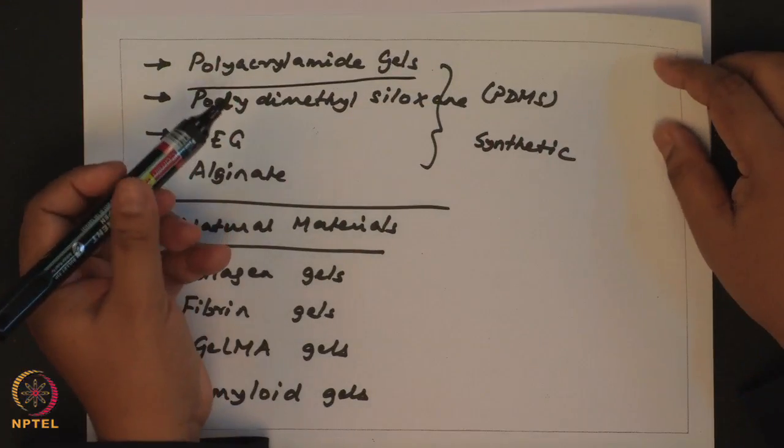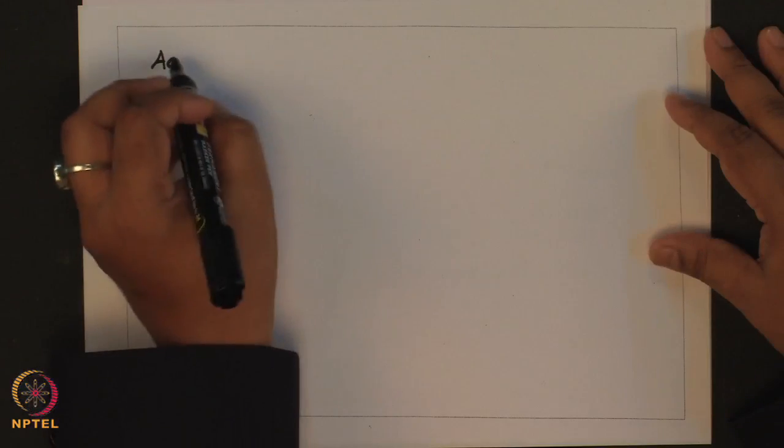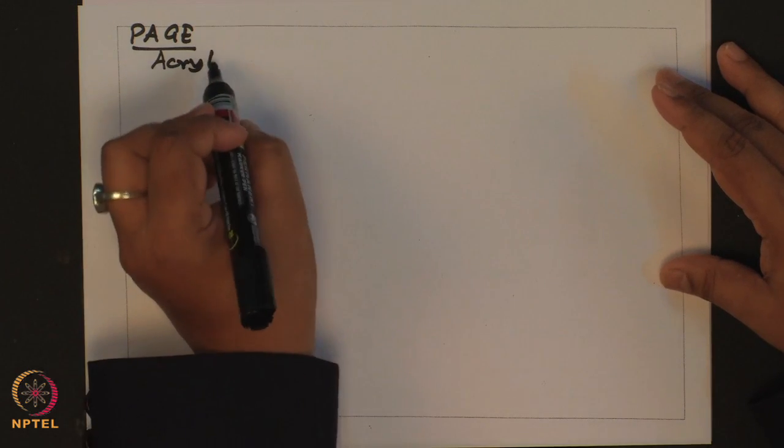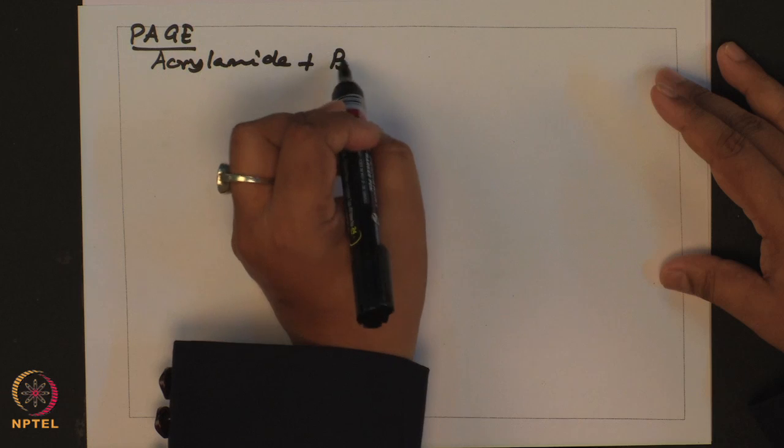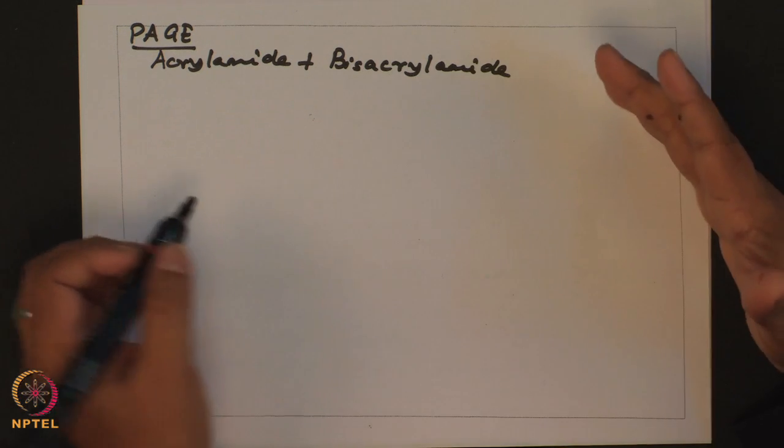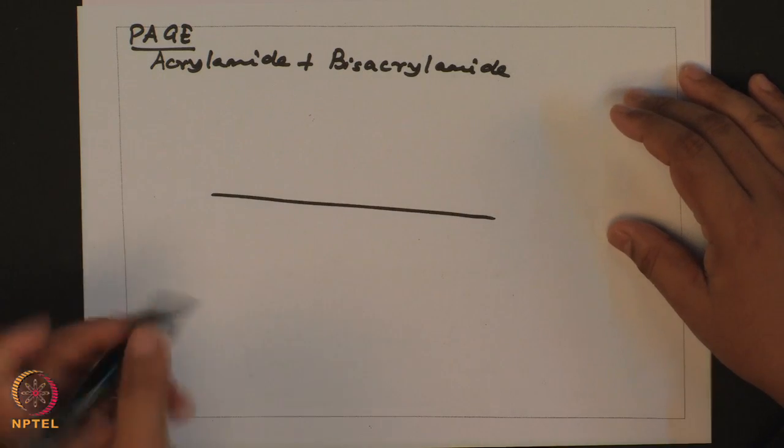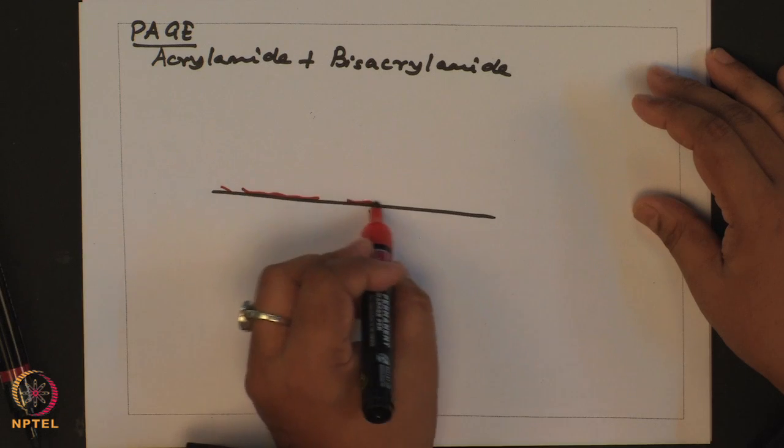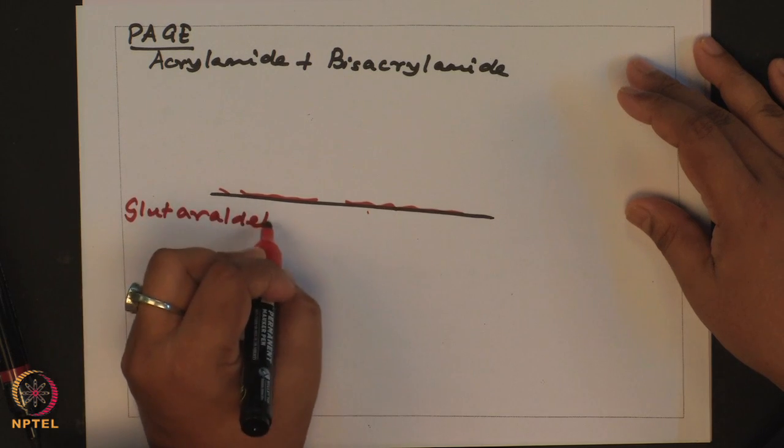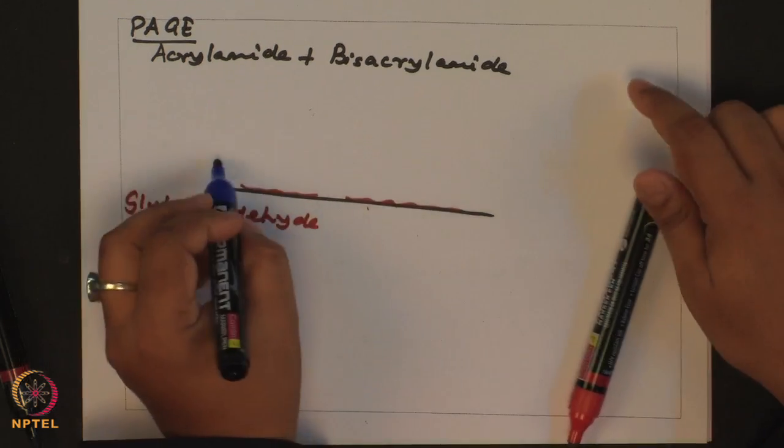I will just discuss as to how you go about making these gels for mechanobiological study. I will take the polyacrylamide gel case. For PA gels, what you do? You link acrylamide - you know that you run proteins for western blot on PAGE polyacrylamide gels right. In PAGE you have acrylamide which is crosslinked with bisacrylamide. So instead of making the gel in a test tube, what you do is you take a glass cover slip. You functionalize, you treat this with aminopropyl triethoxysilane and then with glutaraldehyde. On top of which you dump your polymerizing mixture, polymerizing solution.